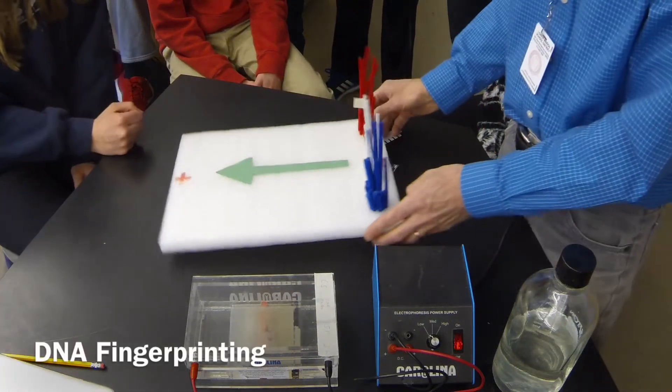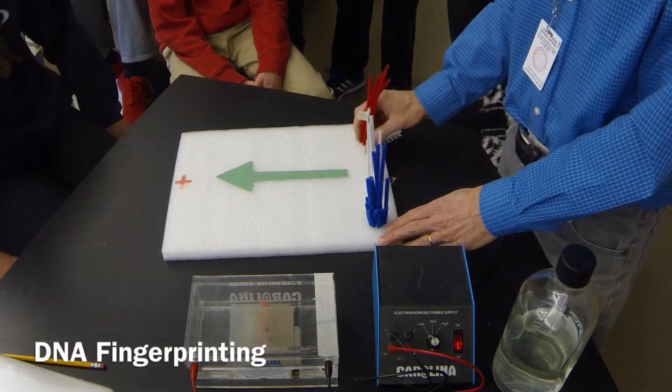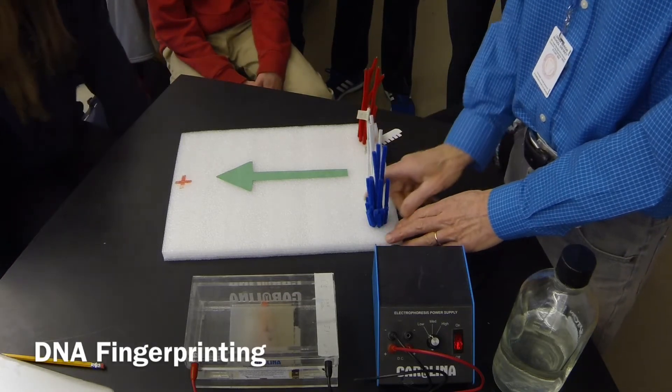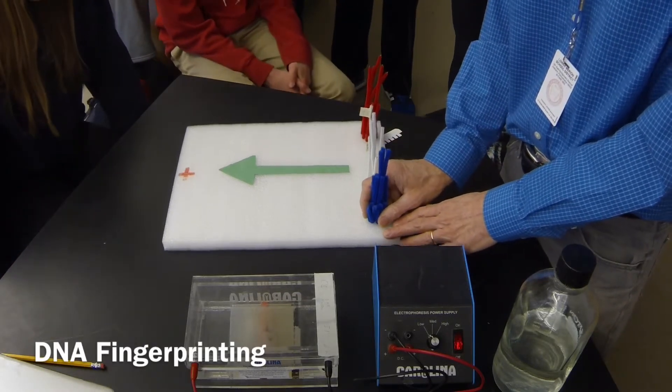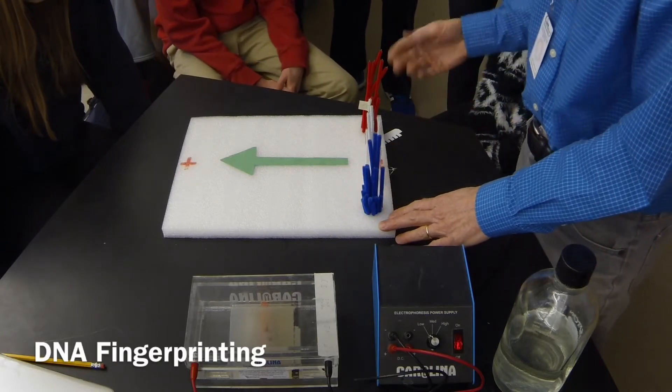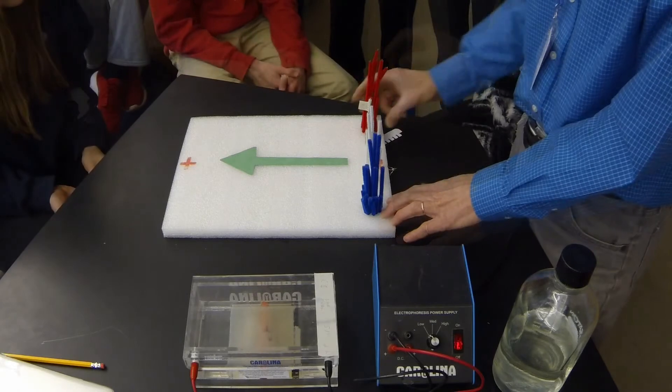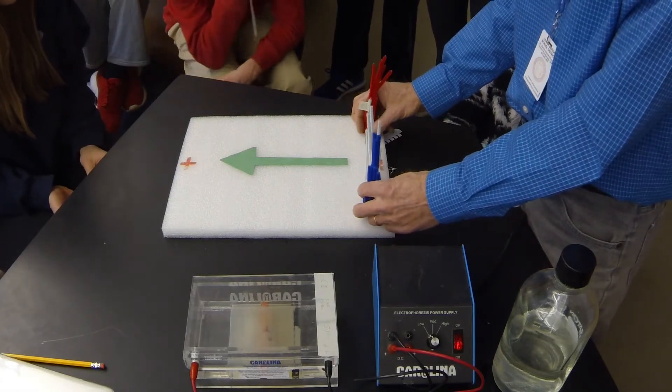Here's a gel. This represents a DNA sample from Emma, and this is the DNA sample from the laptop here. I've used restriction enzyme to cut the DNA into fragments. So I got her sample, I got the sample from the laptop.